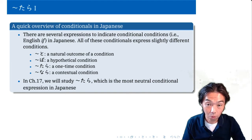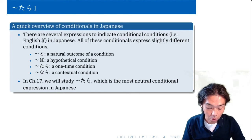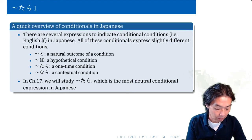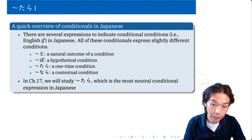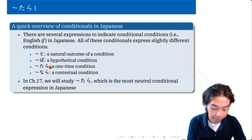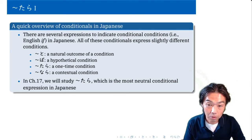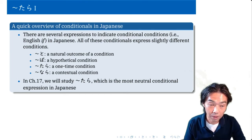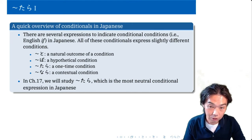In Japanese, there are four major conditionals. The first one is To. The second one is Ba. The third one is Tara. And the last one is Nara. And in this chapter, we will talk about Tara, which is the most neutral without any presupposition about the situation. So it's kind of like a default conditional in Japanese.